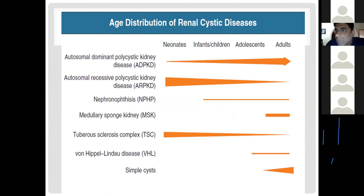This diagram shows the age-wise prevalence of these diseases. Autosomal dominant polycystic kidney disease is more common in adults and less common in neonates, while autosomal recessive polycystic kidney disease is more common in children. Nephronophthisis shows an equivocal distribution, medullary sponge kidneys occur exclusively in adults, and tuberous sclerosis complex has a similar distribution to autosomal recessive polycystic kidney disease.